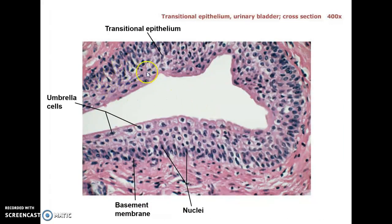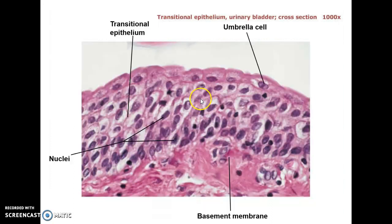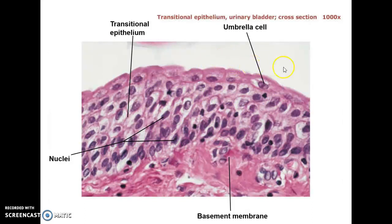There's another view of the same transitional epithelium with a slightly different stain, but you can see the cells all jumbled on top of each other, and the interior of the bladder. And another view, again up close of those transitional epithelial cells all jumbled up on top of each other, with the interior of the bladder visible.